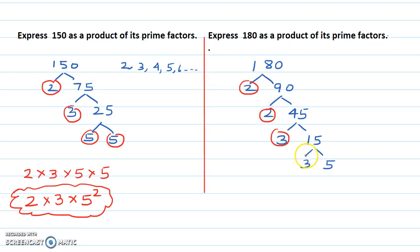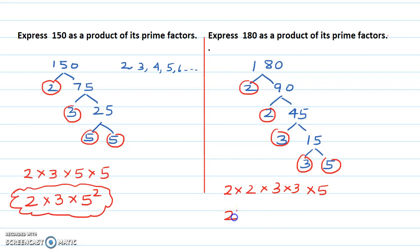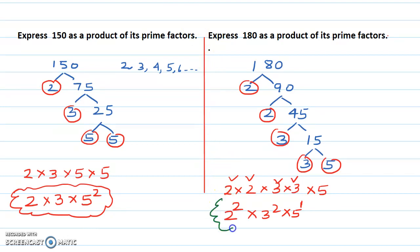Our prime factors are two, two, three, three, and five. That's two twos, two threes, and one five. In index form: two squared times three squared times five. We don't write the power of one — it's understood. This is your final answer. I hope you've learned this prime factors method. In my next video I'll teach you LCM and HCF using the prime factors method. Thank you for watching.